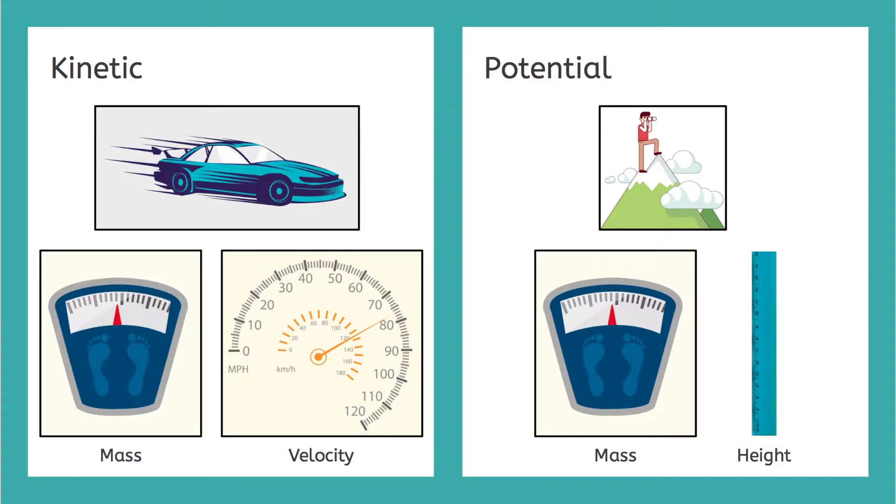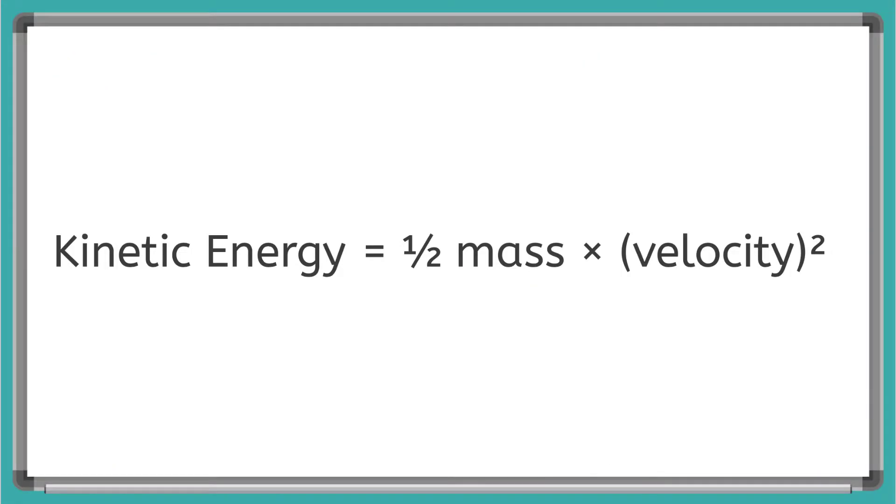Keeping in mind our energy checklist, let's first take a look at the equation for kinetic energy. It goes: kinetic energy equals one-half the mass of the object times the velocity of the object squared.